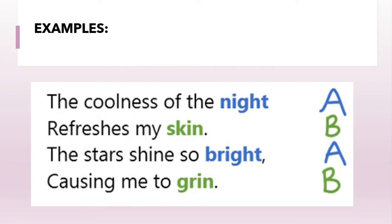Let's read the following stanza: 'The coolness of the night refreshes my skin. The star shines so bright, causing me to grin.' As you can see, the first pair of rhyming words are 'night' and 'bright,' named A and A. The second pair are 'skin' and 'grin,' named B and B. So this is the rhyme scheme: ABAB.